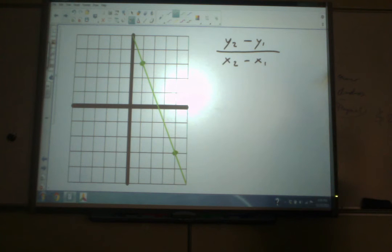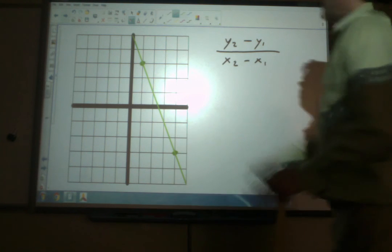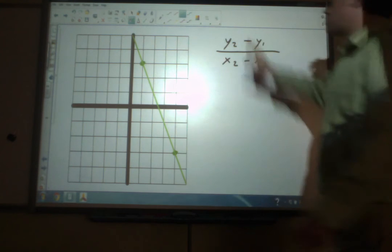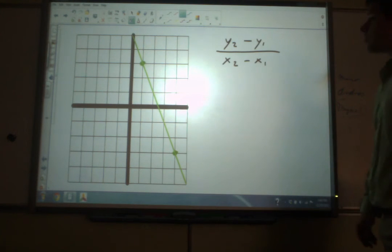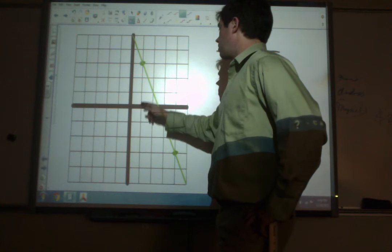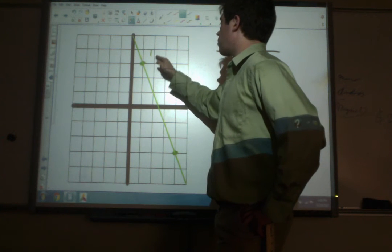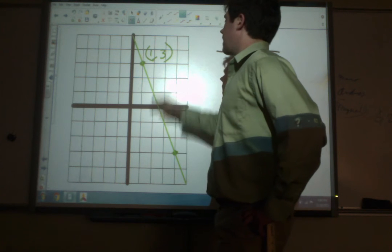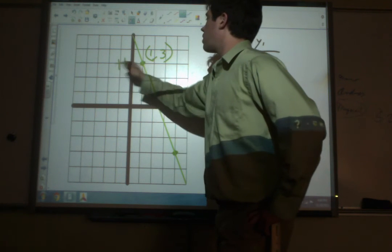All right, not too bad so far. Let's take a look at another example. Here we've got this green line. And we've got the same slope formula here. So let's identify the points. Here's the first point. 1, 1, 2, 3. So this is the point 1, 3. And let's just go ahead and call this point 1 while we're at it.